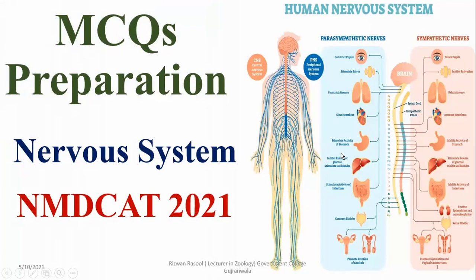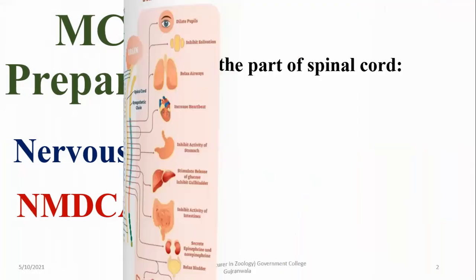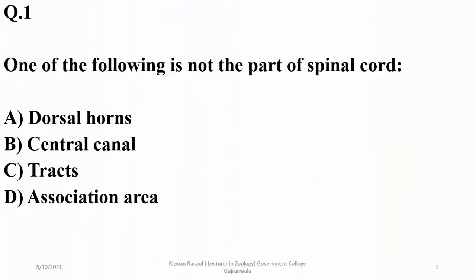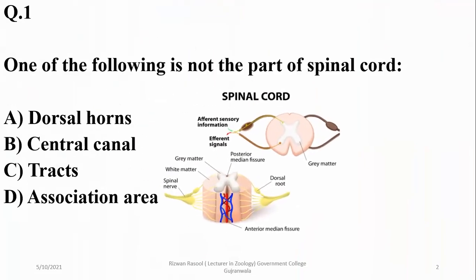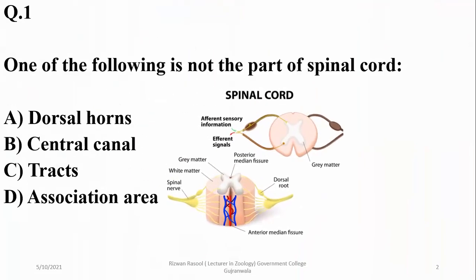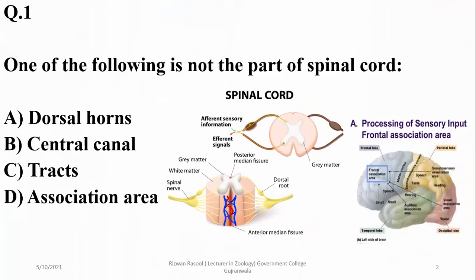Today's video is about some questions related to the nervous system. Question number one: which of the following is not part of the spinal cord? The spinal cord has dorsal horns, ventral horns, central canal, and some tracts. However, 'association area' is a term related to the brain, so delta is the correct answer.